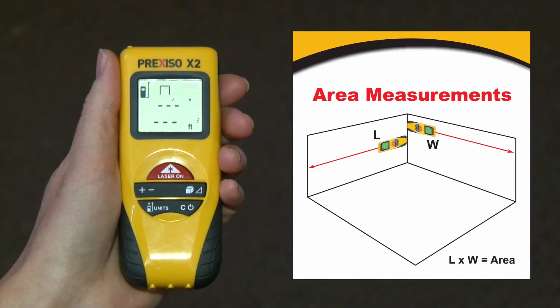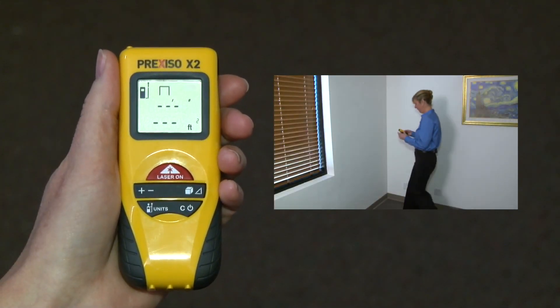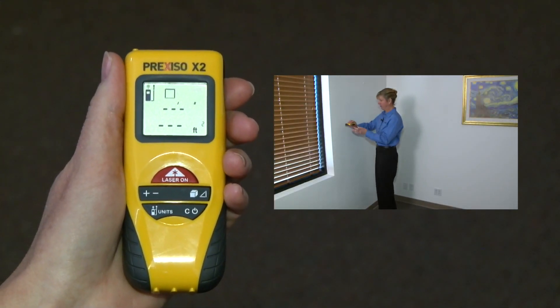It begins by prompting you to take the first measurement of the area by flashing one side of the square. I simply line up and press the red laser button.